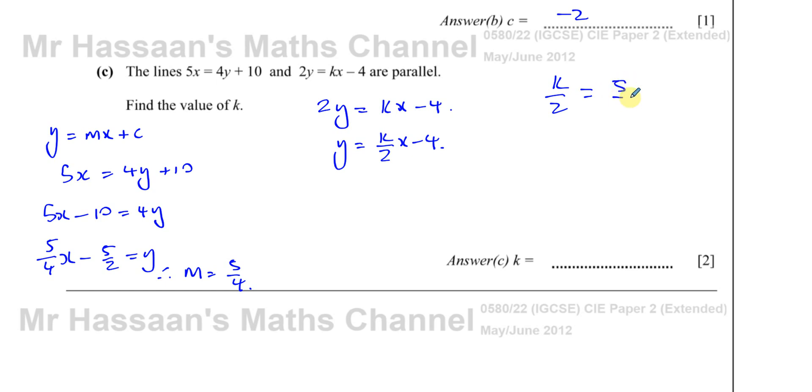So if you make y the subject of this, you have y = k/2 x - 4. So I want k/2 to be the same value as 5/4 because these two lines have to have the same gradient. So this value, k/2, must be the same as 5/4, which means k equals, if you multiply both sides by 2, you have 5/4 times 2. The 2 cancels with this. So k is equal to 5/2 or 2.5 if you want. And that's the answer to part C.